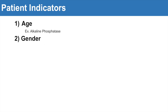The next factor is gender. With creatine kinase, for example, males typically have a higher level than females on average, and this is typically because males have a higher muscle mass than females. So we always have to think about how gender influences our target of interest and affects what would be normal for that individual.